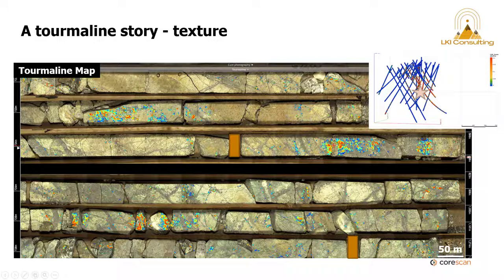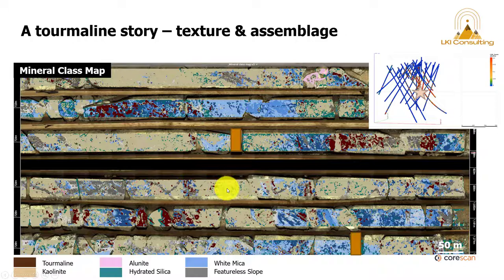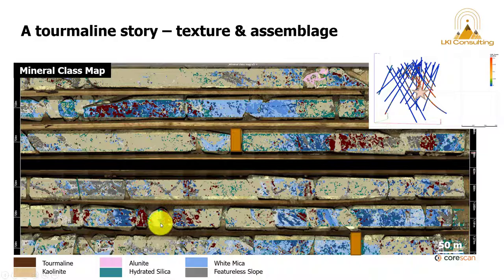And here you can see the texture in the assemblage. So here's the mineralogical class map. In this brown color is all kaolinite. This darker brownish red is the tourmaline. You have hydrated silica in this greenish color.